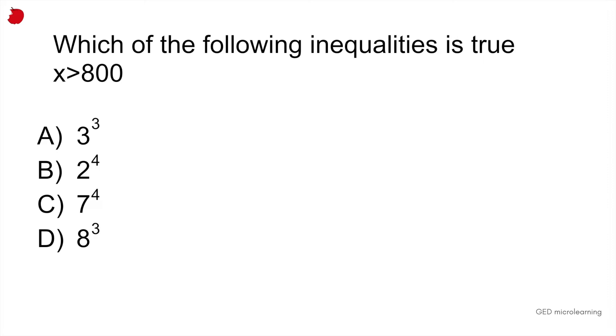So remember, an exponent, that little number that you see raised is telling you how many times you're going to multiply the base number by itself. So 3 raised to the 3rd power is another way of saying 3 times 3 times 3, which is 27.